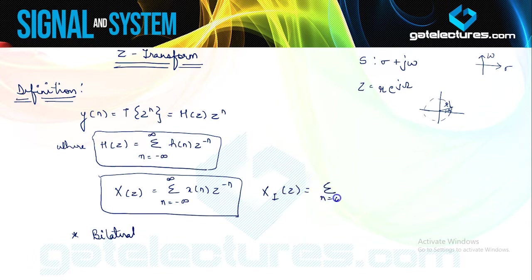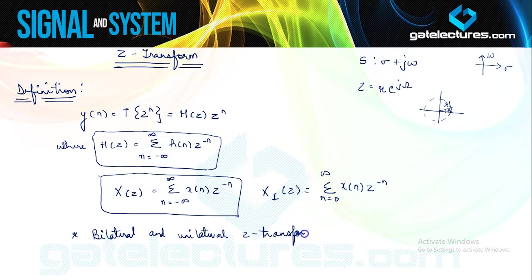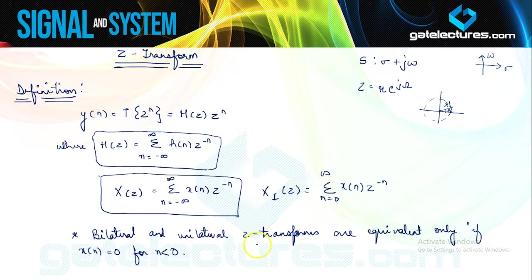The unilateral Z-transform of a system is going to be the summation from 0 to infinity of x(n) times Z to the power minus n. The bilateral and unilateral Z-transforms are equivalent only if x(n) itself is causal — that is, x(n) equals 0 for n less than 0. Generally, when we discuss Z-transform, we discuss the bilateral Z-transform only, and we look at the unilateral Z-transform in a separate section.